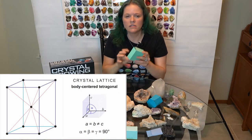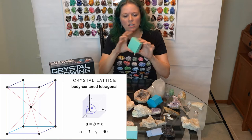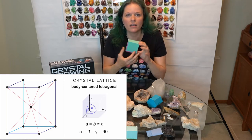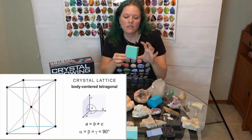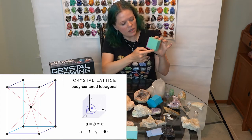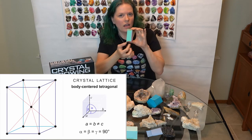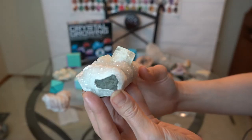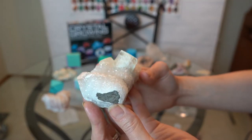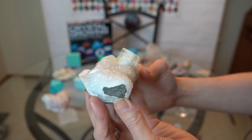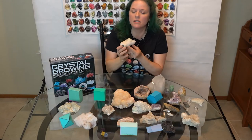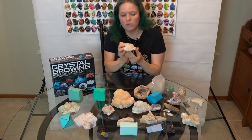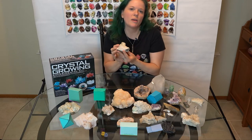So the next crystal structure is tetragonal, and tetragonal is like cubic — as you can see it looks like a cube — but the only difference is instead of having all of the different sides being of equal length, these have two equal lengths but one side is of a different length.